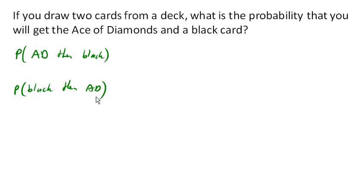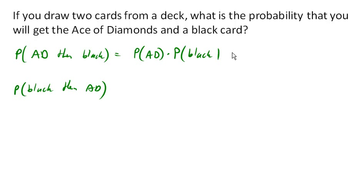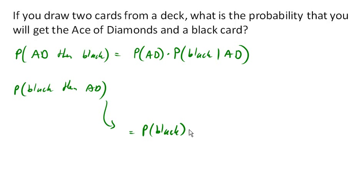For the first case, we find the probability of the ace of diamonds, then the probability of getting a black card given that we already pulled the ace of diamonds. For the second case, we find the probability of getting a black card, then the probability of getting the ace of diamonds given that we already pulled a black card.